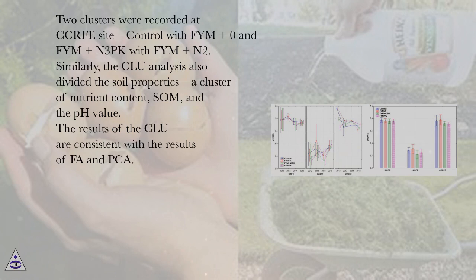Two clusters were recorded at C-KERF site: control with FYM+0 and FYM+N3PK with FYM+N2. Similarly, the CLU analysis also divided the soil properties: a cluster of nutrient content, SOM, and the pH value. The results of the CLU are consistent with the results of FA and PCA.